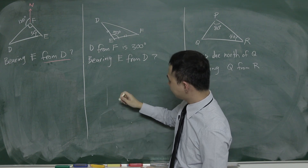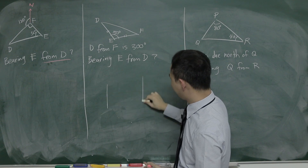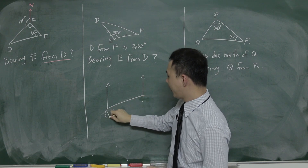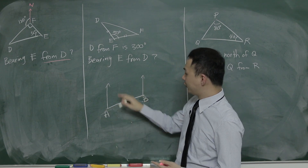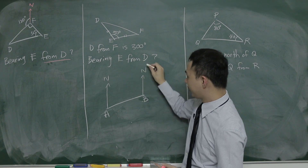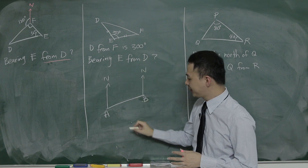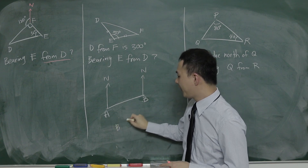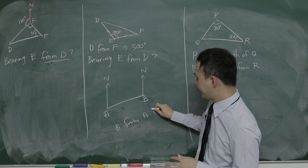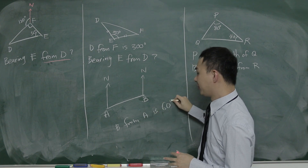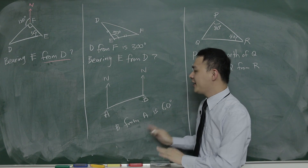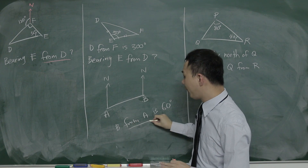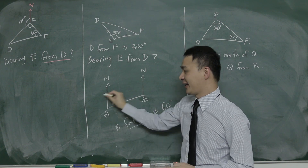Let's say we have two lines here — we have A and B. When we read the bearing, let's say bearing B from A is 60 degrees — this is just an example. When they say 'from A', the angle must be at A here. Why? Because 'B from A' means the angle must start from A, and then I draw the angle connecting to the line AB.